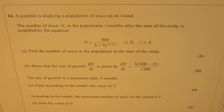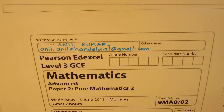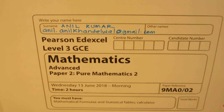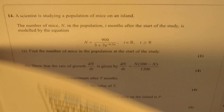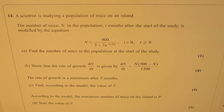I'm Anil Kumar. Welcome to my series on providing solutions to some international test papers. Here we have picked up question number 14 from a previous test paper of Cambridge International. It is Advanced Mathematics, June 2018 test paper. This is the last question of the test paper, extremely important. I hope its solution will help many people globally.